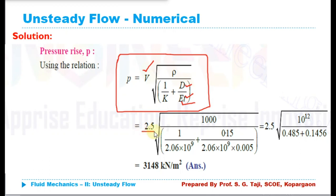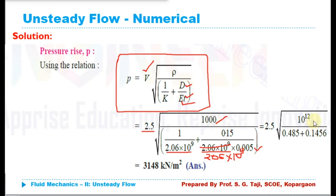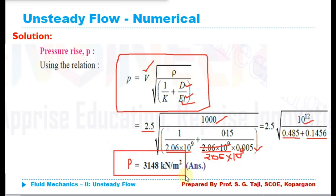Putting in all the values: velocity 2.5 m/s, density 1000 kg/m³, bulk modulus of water 2.06 × 10⁹, modulus of elasticity of pipe material 206 × 10⁹, thickness 0.005 m, diameter 0.15 m. Taking 10⁹ common, the denominator becomes (1/2.06) + (0.15 / (206 × 0.005)). Taking the square root, the value of P comes out as 3148 kilonewton per meter square. This is the required answer when considering the elasticity of the pipe.